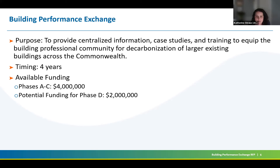There is the potential for a fourth phase, Phase D, for up to $2 million. Here in Massachusetts, there are resources for electrification and decarbonization for the residential sector and for new construction, but MassCEC identified a need for supporting professionals involved with retrofitting larger existing buildings — those over 20,000 square feet. With the introduction of building performance standards in Boston and Cambridge, and more being proposed and adopted in other communities, we need a centralized resource to get the building professional community up to speed.